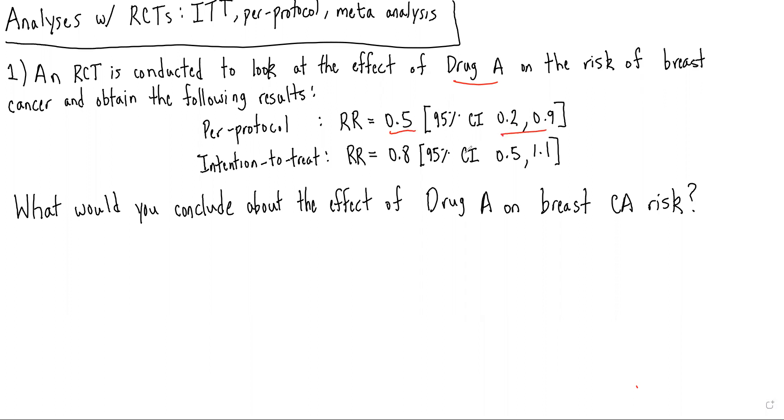The intention-to-treat analysis has a risk ratio of 0.8 with a 95% confidence interval from 0.5 to 1.1, and we're asked, what would you conclude about the effect of drug A on breast cancer risk?